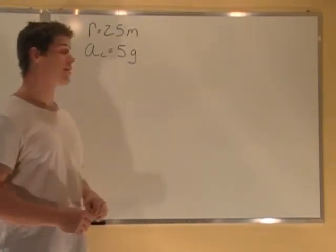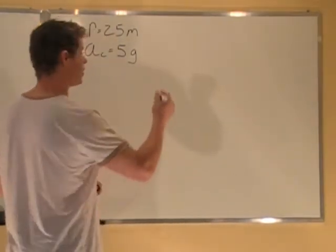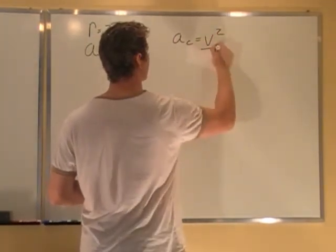So that's a centripetal acceleration, and we want to know what is his velocity. Well, very simply, the formula AC equals V squared over R.